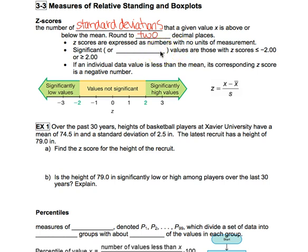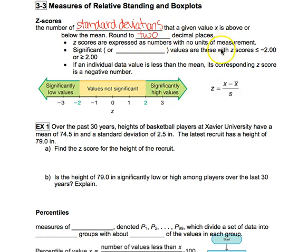When you check the answers for sections 3.1 and 3.2, most of the answers have a label — for example, the mean is 72.5 inches. Z-scores do not have a unit of measurement on them.